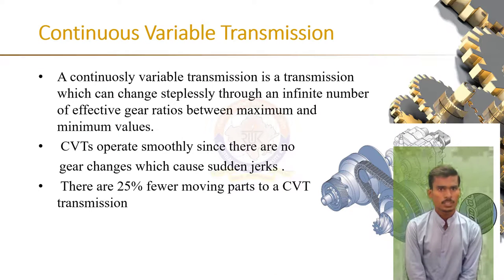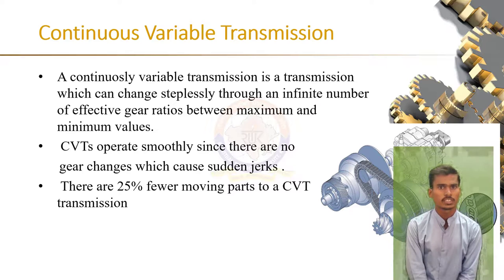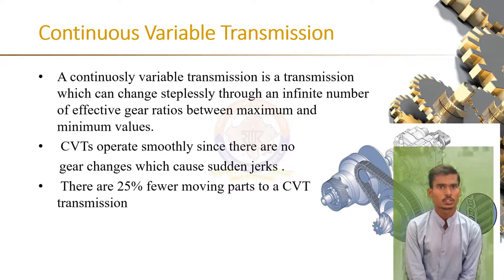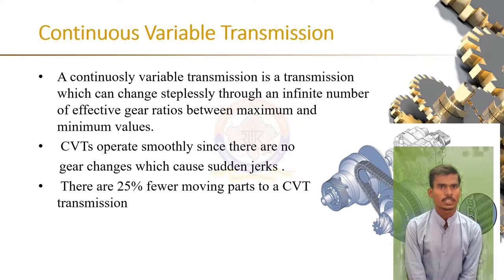Continuously Variable Transmission (CVT): Unlike a conventional automatic transmission system, the CVT does not make use of gears. Instead, it has two pulleys whose diameters are variable and are connected by a belt or chain. One pulley is connected to the engine and the other is linked to the wheels where power is delivered. The pulleys are movable and as they come closer together the belt or chain drive ratio changes, making the effective diameter of the pulleys larger or smaller accordingly.